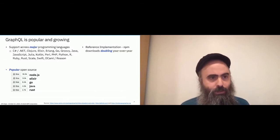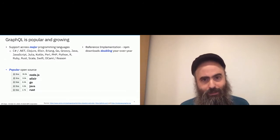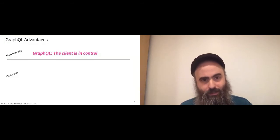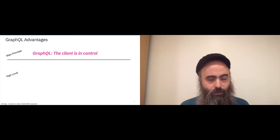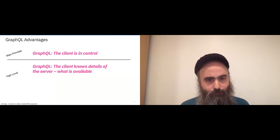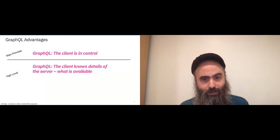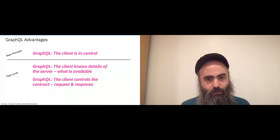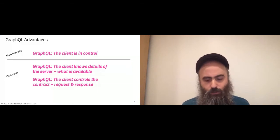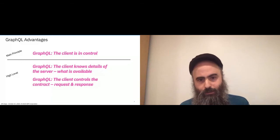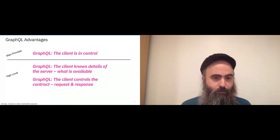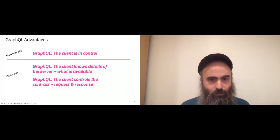Now they want to get slightly more into detail. The main principle is that the client is in control. TBB delves one level deeper: what are the high-level subsets of this principle? One is that the client knows all the details of the server — it knows what's available. The other is that once you develop your query and you're running it in production, the client controls the contract of every request-response. If you're used to WSDL and SOAP or OpenAPI Swagger, this is a little weird because you expect the server to define the contract. But if you're used to GraphQL, that's not the case — you've come to expect this.